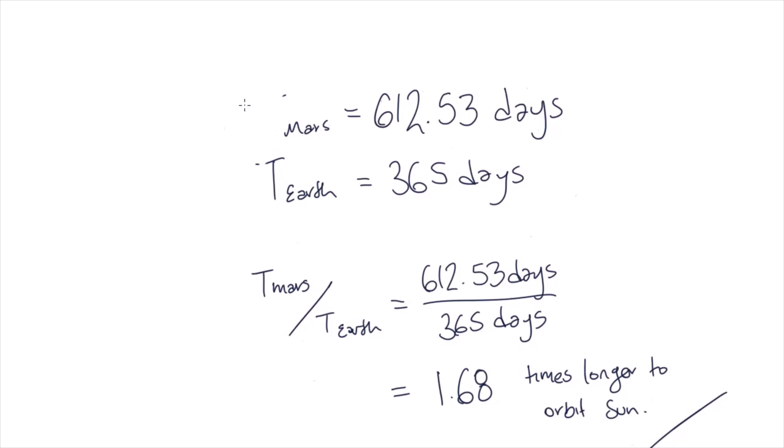Now, if you look up the orbital period of Mars compared to that of Earth, you will find that Mars actually takes 1.88 times longer to orbit the Sun. Have we done anything wrong? As with many exercises involving uniform circular motion, in this example we made the approximation that Mars was traveling in a circular orbit. In reality, Mars travels around a slightly elliptical orbit, as does Earth.